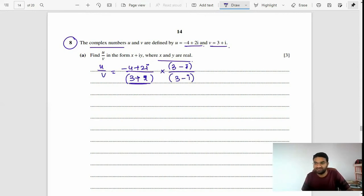At the numerator, it will be negative 4 times 3, then positive 4i, then 2i times 3 is 6i, then 2i times negative i will be negative 2i squared. The value of i squared is negative 1.